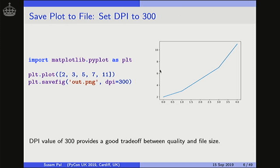To save a plot with a DPI of 300, we need to use this additional keyword argument called DPI with a value of 300 while calling the savefig function call.